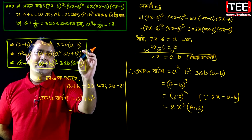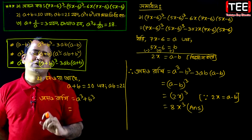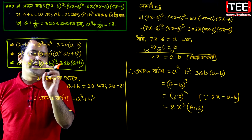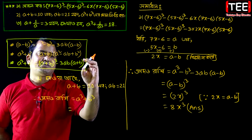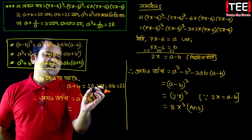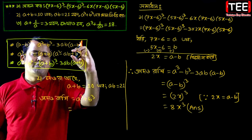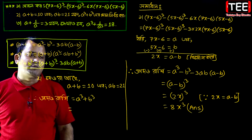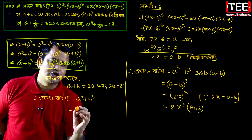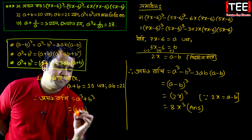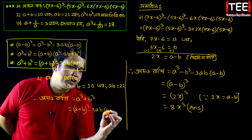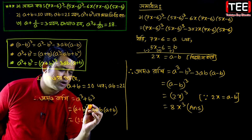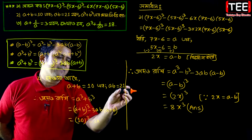We know that a cube plus b cube equals a plus b whole cube minus 3ab into a plus b. We are given a plus b equals 10 and ab equals 21. Substituting these values into the formula gives us the calculation.